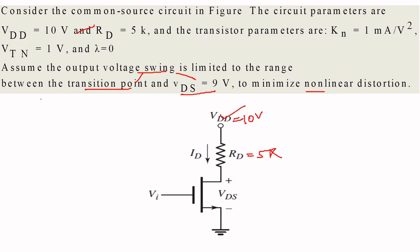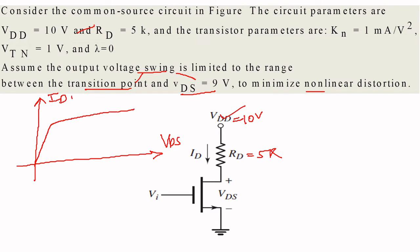So the nonlinear distortion can be avoided. Now we want to understand where the transition point is. Looking at the ID versus VDS graph, you will have a curve, and there is a transition point between the saturation region and the non-saturation region. This point we designate as VDS saturation.